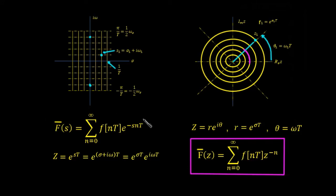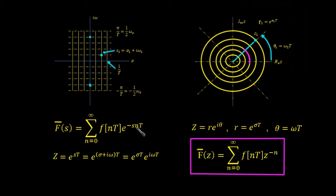We can go from the discrete-time Laplace transform to the Z-transform. This is the forward Z-transform — going from a function of time to a function of Z. Since Z is written as e to the sT, and e to the sT appears in the Laplace sum, the only remaining factor is the value to the power of minus N. So we replace it with F(nT) times Z to the minus N. This gives us our Z-transform.